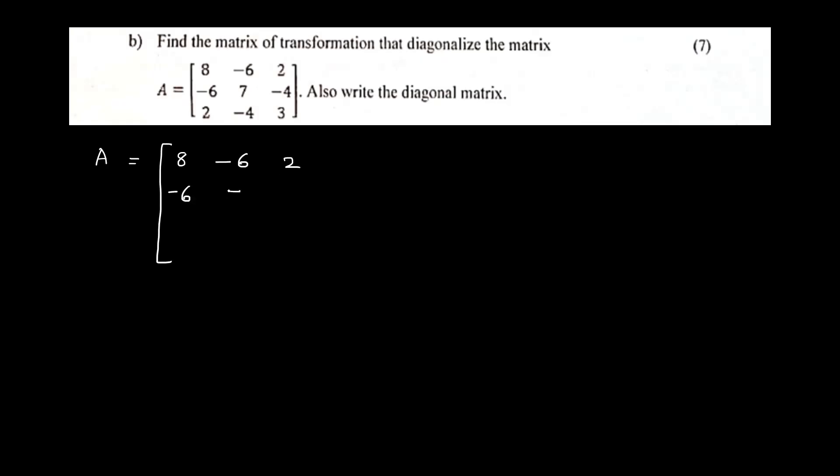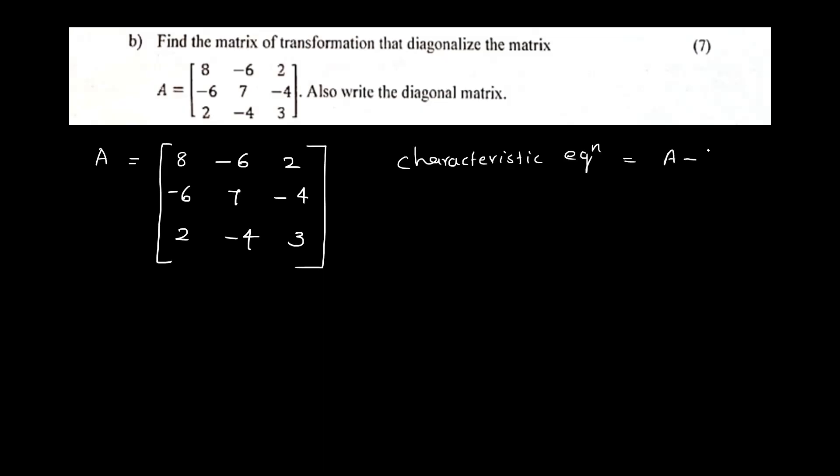Find the matrix of transformation that diagonalizes the matrix A equal to [8, -6, 2; -6, 7, -4; 2, -4, 3]. Also write the diagonal matrix. To find eigenvalues, we use the characteristic equation: determinant of (A minus lambda I) equal to 0.